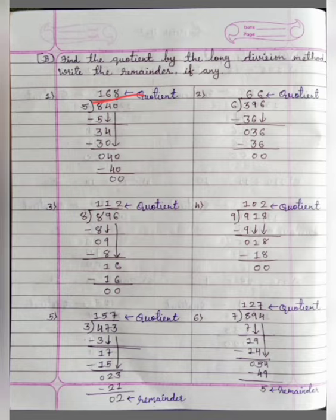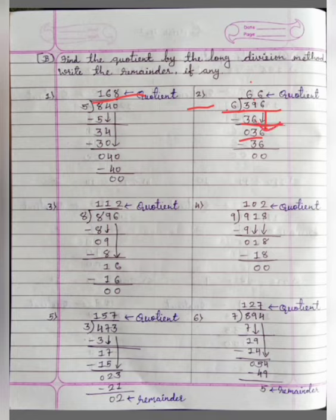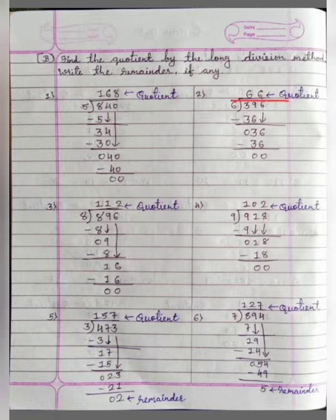In the same way, number 2: 396 divide by 6. 6 sixes are 36. 39 minus 36 is equal to 3. And we will bring down this 6 here, so now we have 36. Again, 6 sixes are 36. 36 minus 36 is equal to 0. Our quotient is 66.